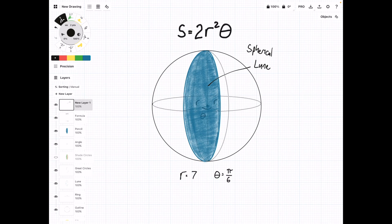So how we can do that is using this formula: s equals 2r²θ. So at the bottom, I have a little example here. It's really as simple as just plugging these values in. So we're going to do s equals 2 times 7² times π/6. Plug that into your calculator, and you get 51.31 units squared.